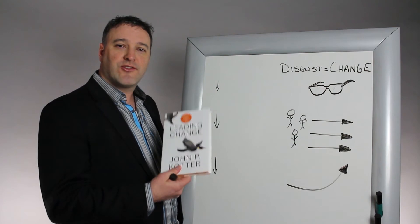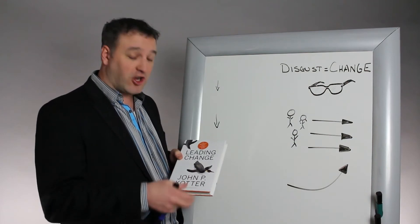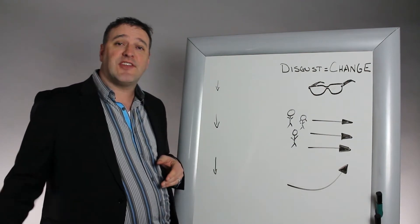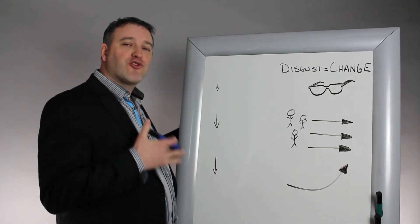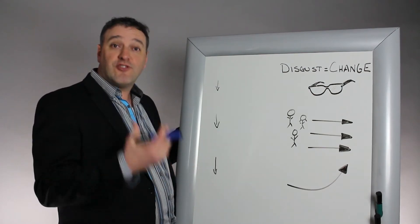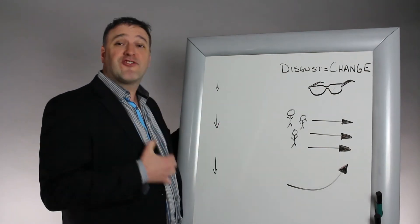If you recall, we're reviewing this book called Leading Change, which is by John Kotter, and he details the eight-stage process of how to transform an organization. And usually when you're transforming an organization, it's all about change, and what you're trying to change is usually something you don't like.